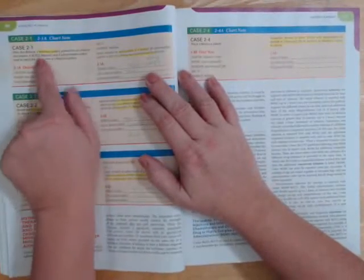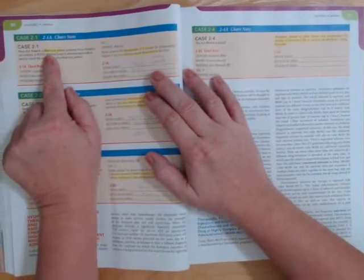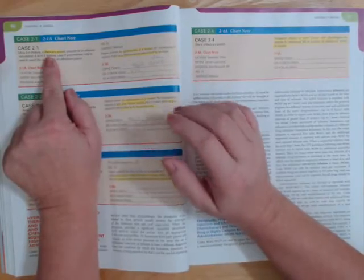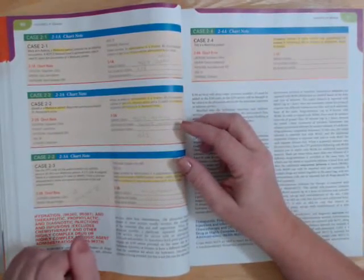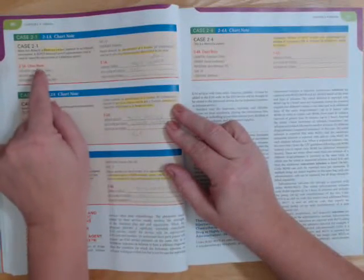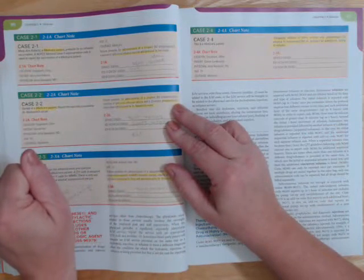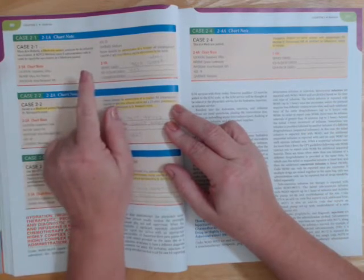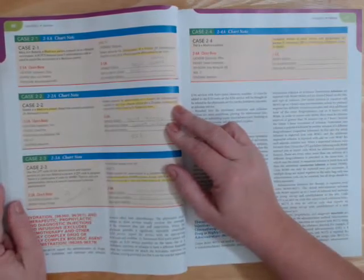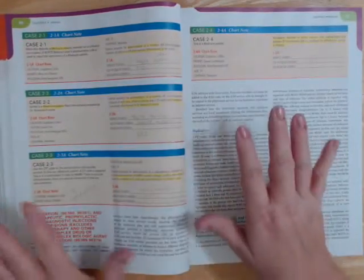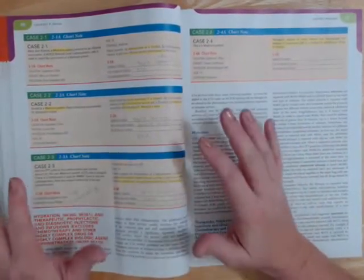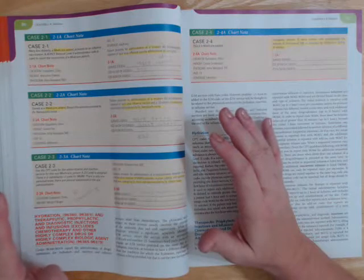Case 2-1 is a Medicare patient that should trigger you to use the HCPCS book for a flu shot. You'll get your administration code out of the HCPCS.